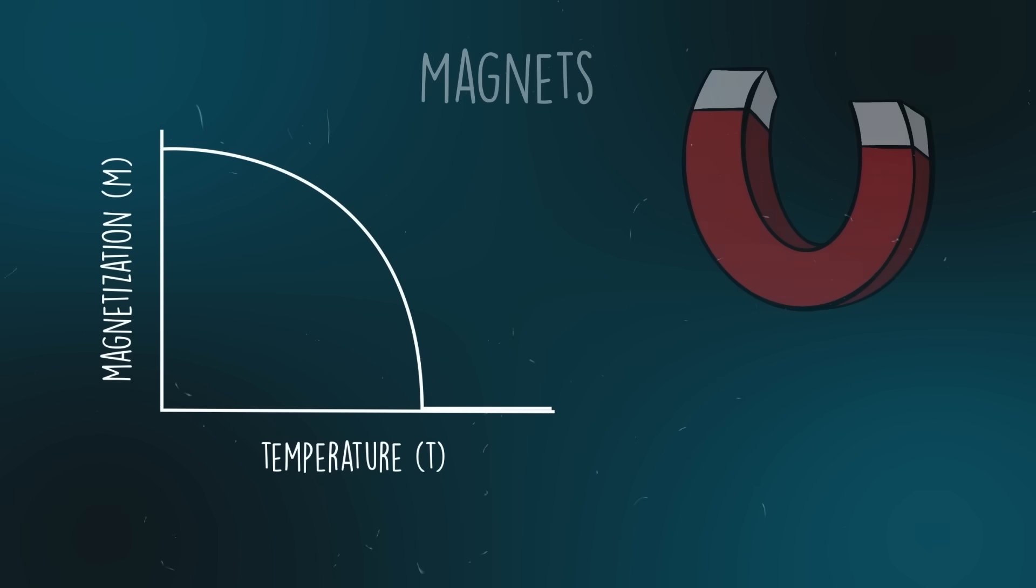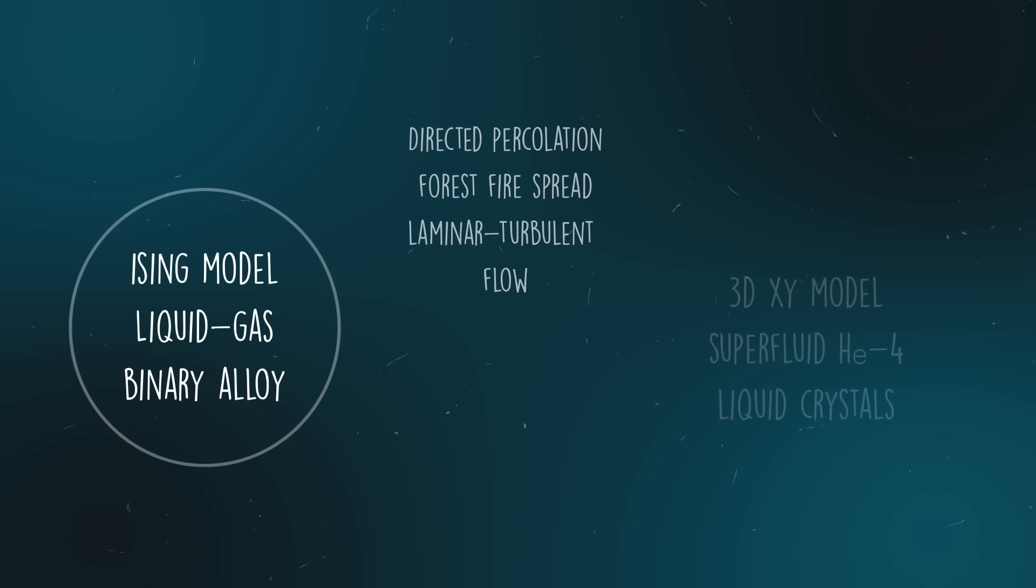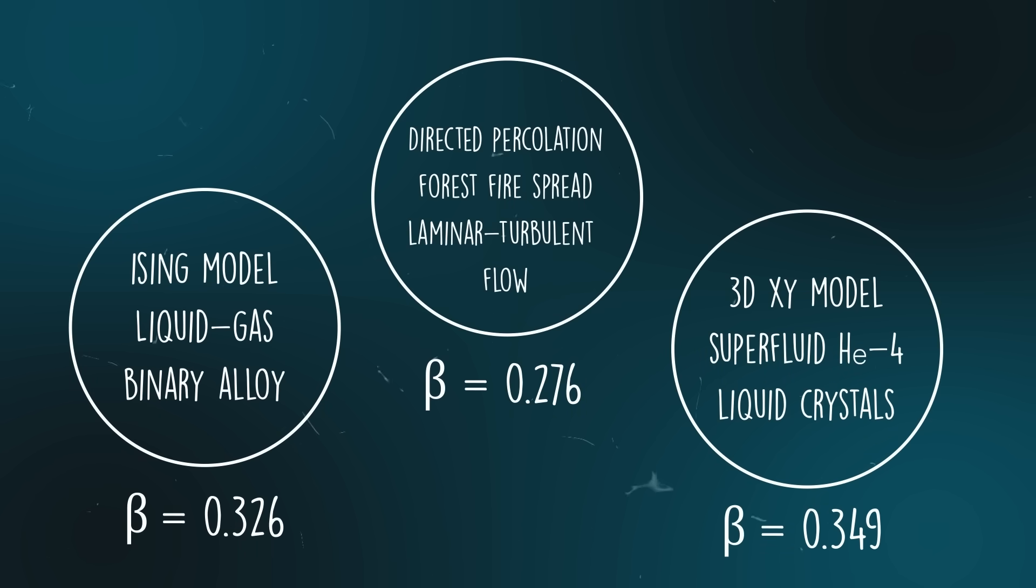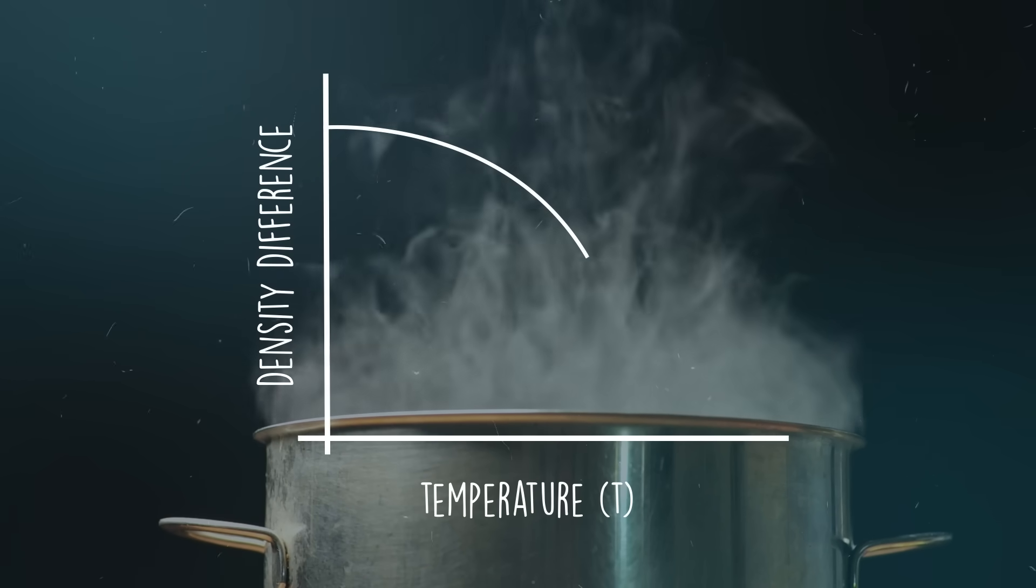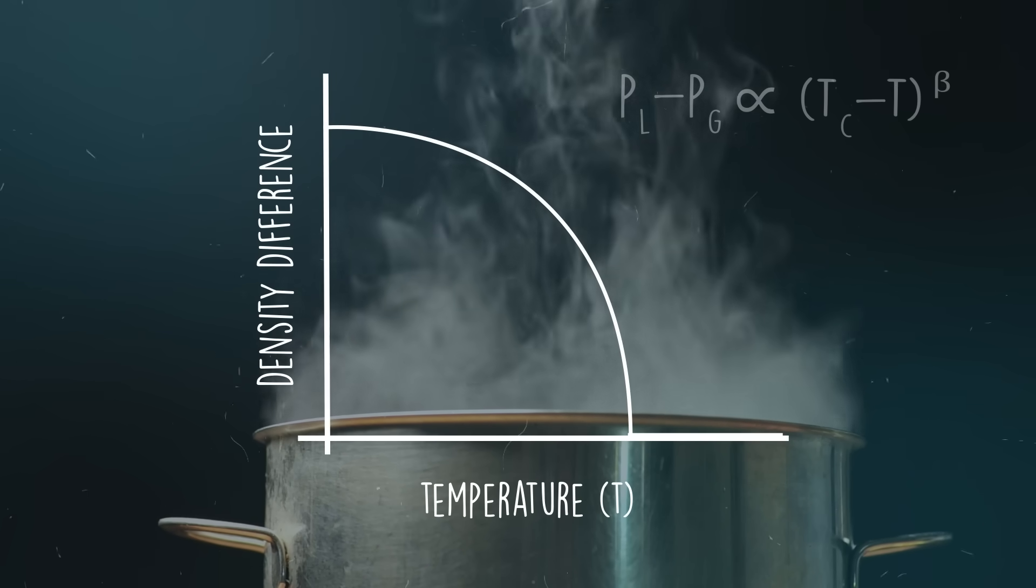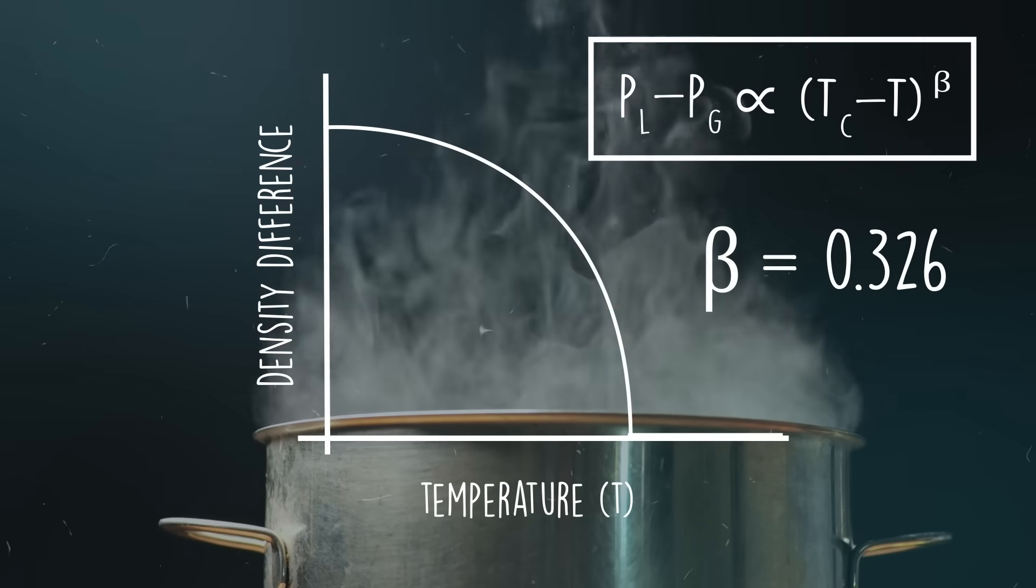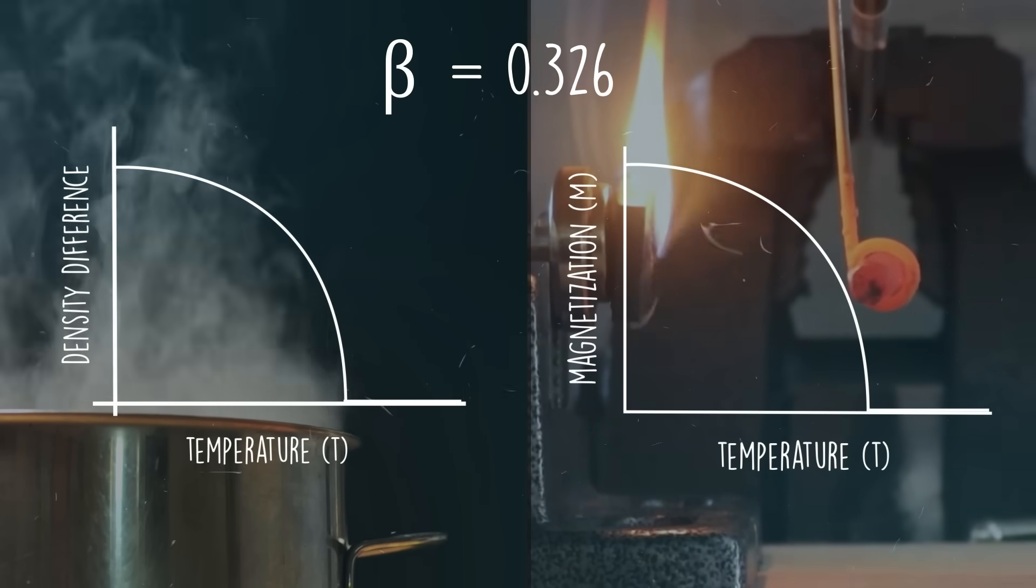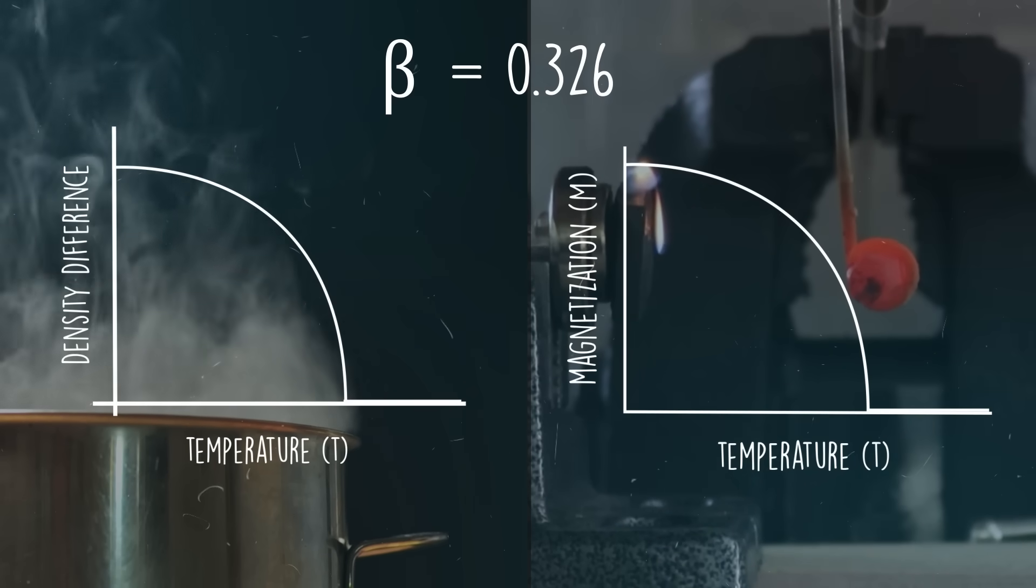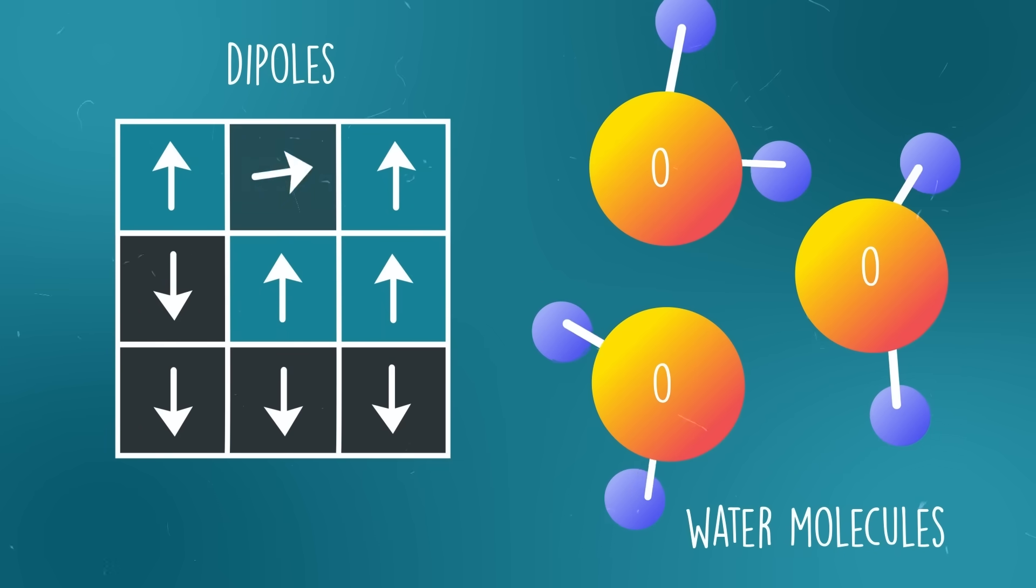Using numerical simulations, we've found that the critical exponent beta for a magnet is 0.326 in three dimensions. Now, what's crazy is that many other completely different systems all share the same critical exponents. Take the liquid to gas transition. If we look at how the densities of the liquid and gas change as the temperature changes, we find that their difference obeys this power law. Experiments show that for a wide range of liquids, the critical exponent is 0.326, the same as the magnetization for magnets. This means that near the critical temperature, fluctuations in water and vapor densities behave identically to the way magnetic dipoles fluctuate in a magnet. Even though dipoles and water molecules might actually interact in vastly different ways at the microscopic scale, at the macroscopic level, the phase transition behaviors are identical.